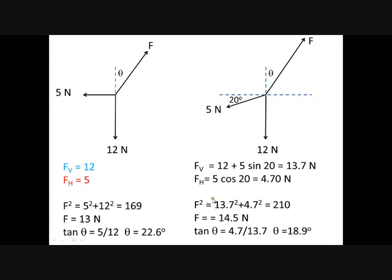But again, you can add those two forces together with Pythagoras. You get F squared is 210, gives you F equals 14.5 Newtons. You get tan theta equals 4.7 over 13.7, gives you 18.9 degrees.